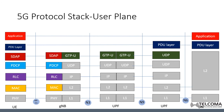Finally, the MAC layer — the Medium Access Control layer — offers many functions and services. For example, mapping between logical channels and transport channels, multiplexing and demultiplexing of MAC SDUs belonging to one or different logical channels, scheduling information reporting, error correction, and lastly, priority handling.